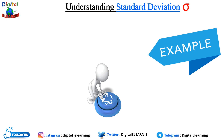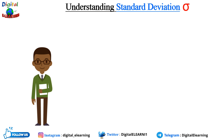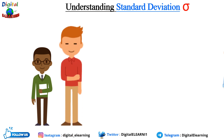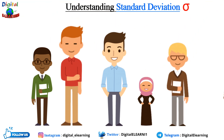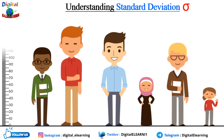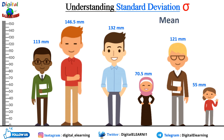Let's see this with the help of a real example. Imagine you have a group of friends and you want to know how tall they are. You could calculate the average height, but that won't tell you the whole story — some friends might be taller than average, while others might be shorter. Standard deviation helps you understand this variation. You measure the height of each friend and record it. Then you calculate the mean of all six friends, which comes to 106.33.